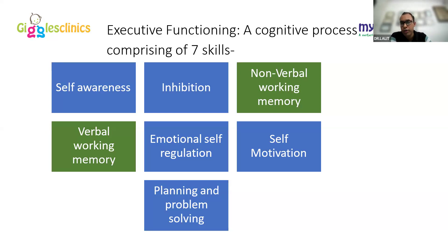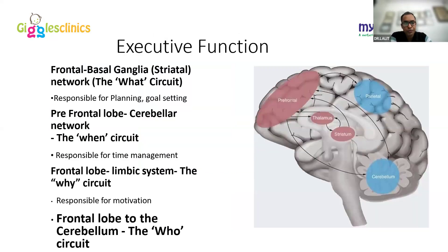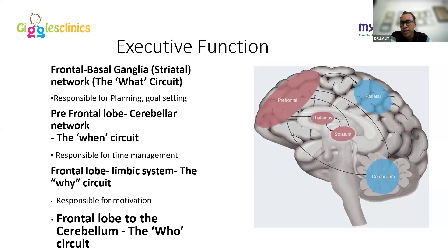Executive functioning is mediated by prefrontal circuits. The 'what circuit' involves the frontal-basal ganglia network, responsible for planning and goal-setting. The 'when circuit' comes from the prefrontal-cerebellar network, responsible for time management. These WH-question circuits are important in language teaching for autistic children — what, when, and where questions can be taught using flashcards and visual strategies.